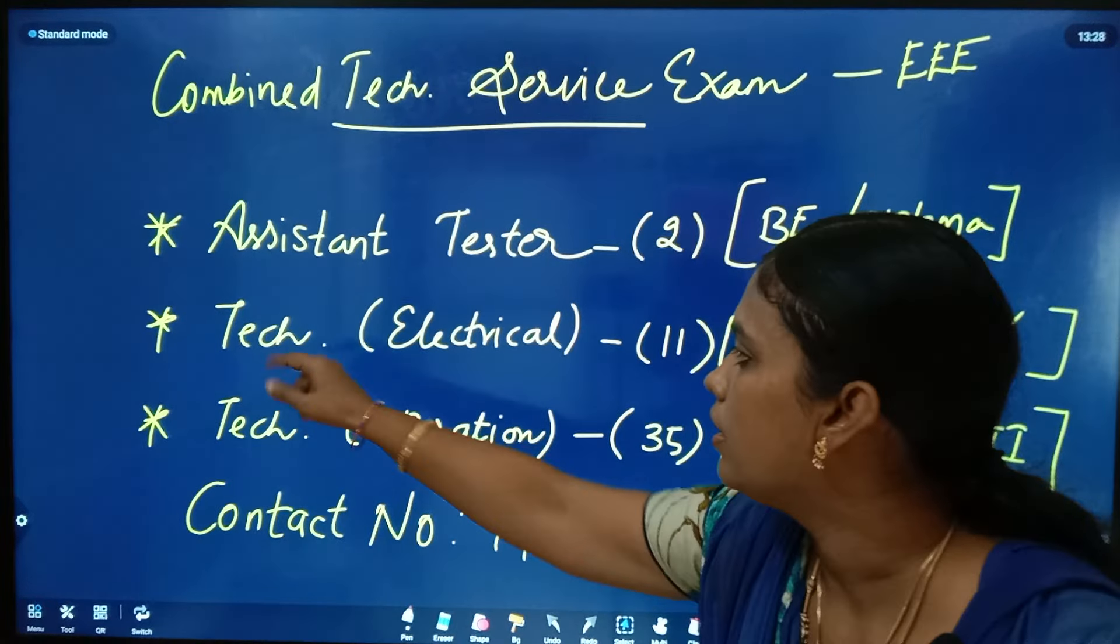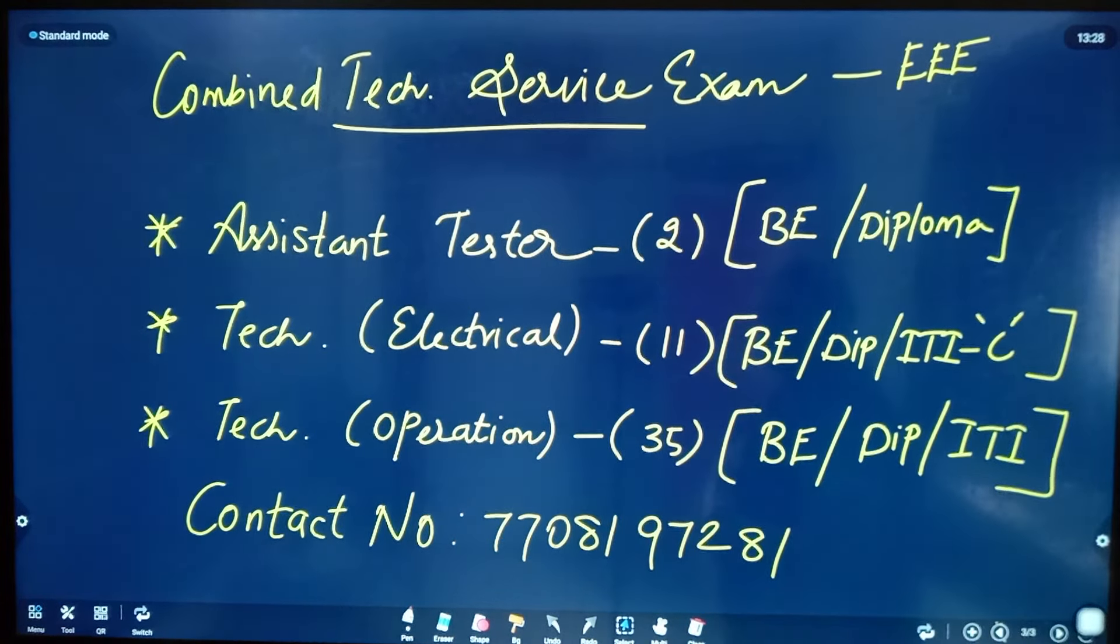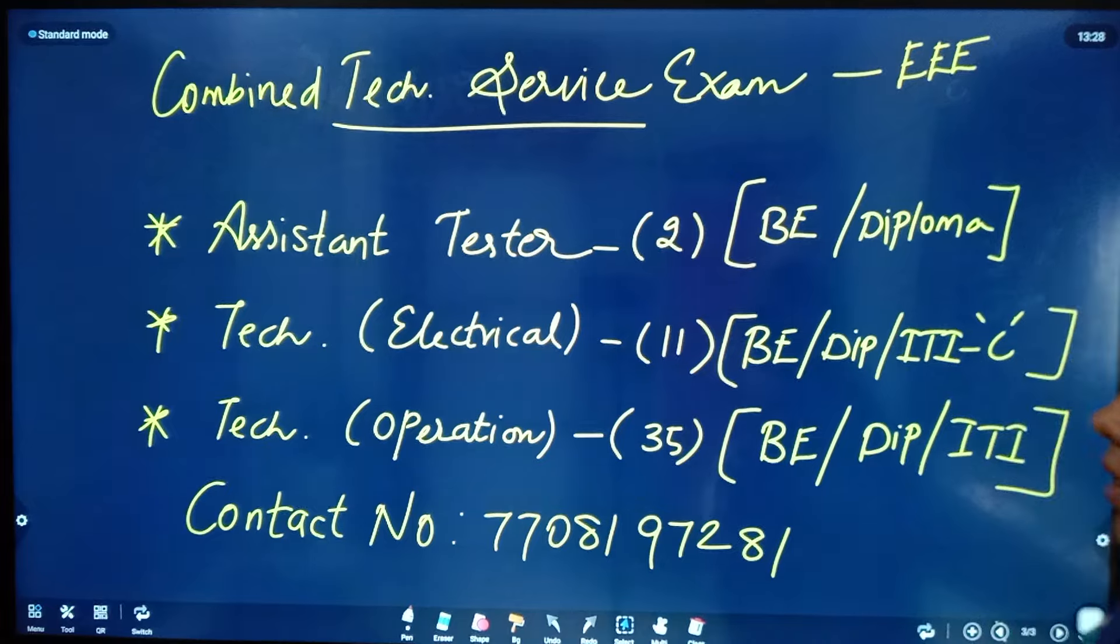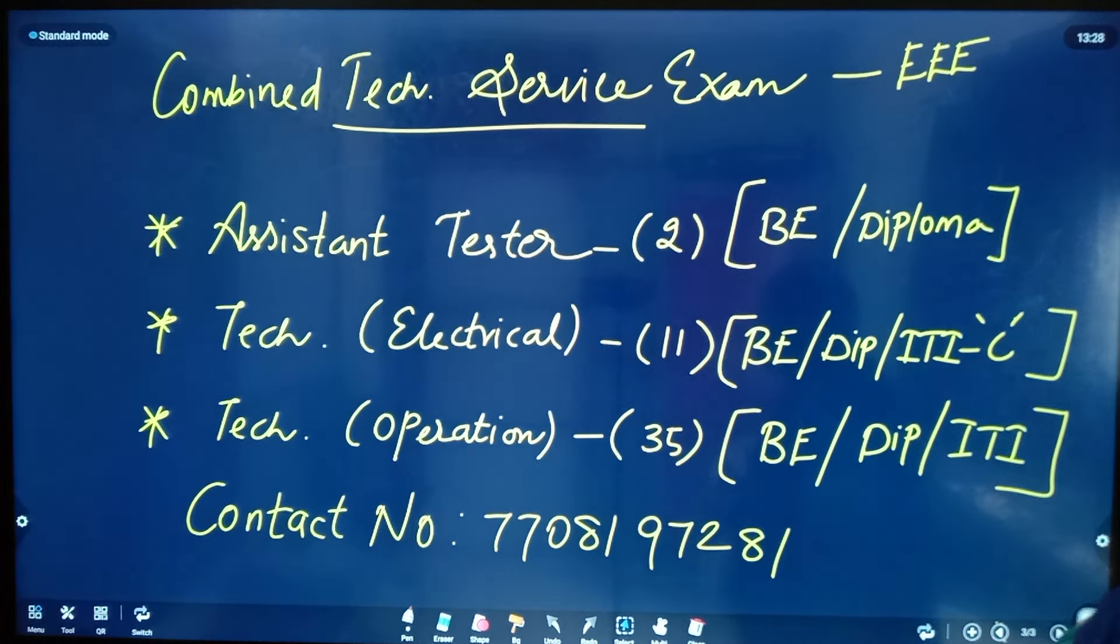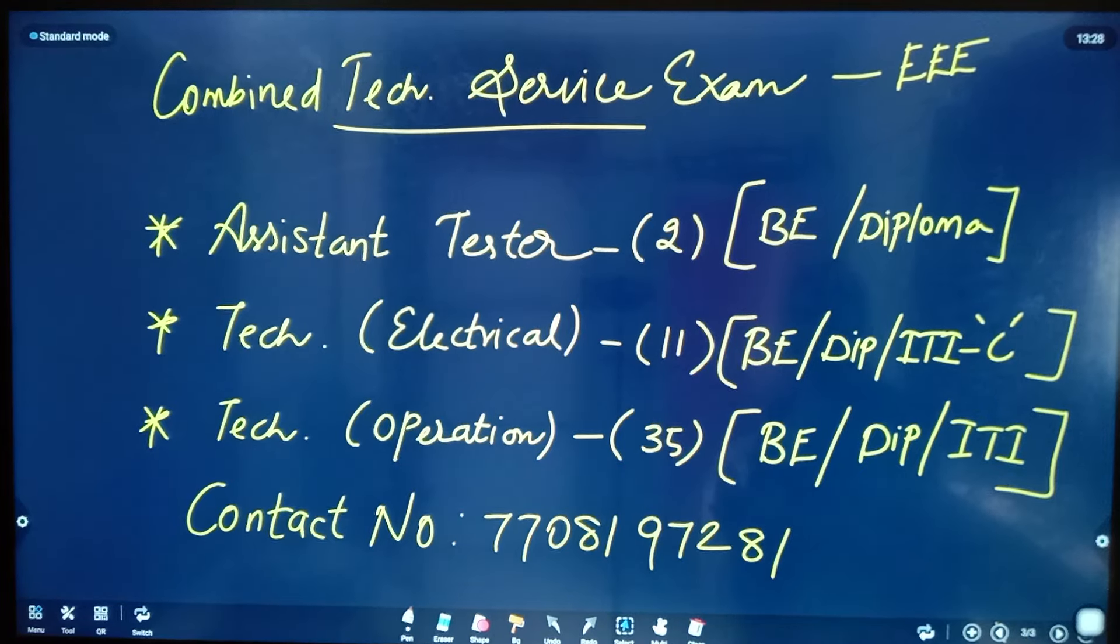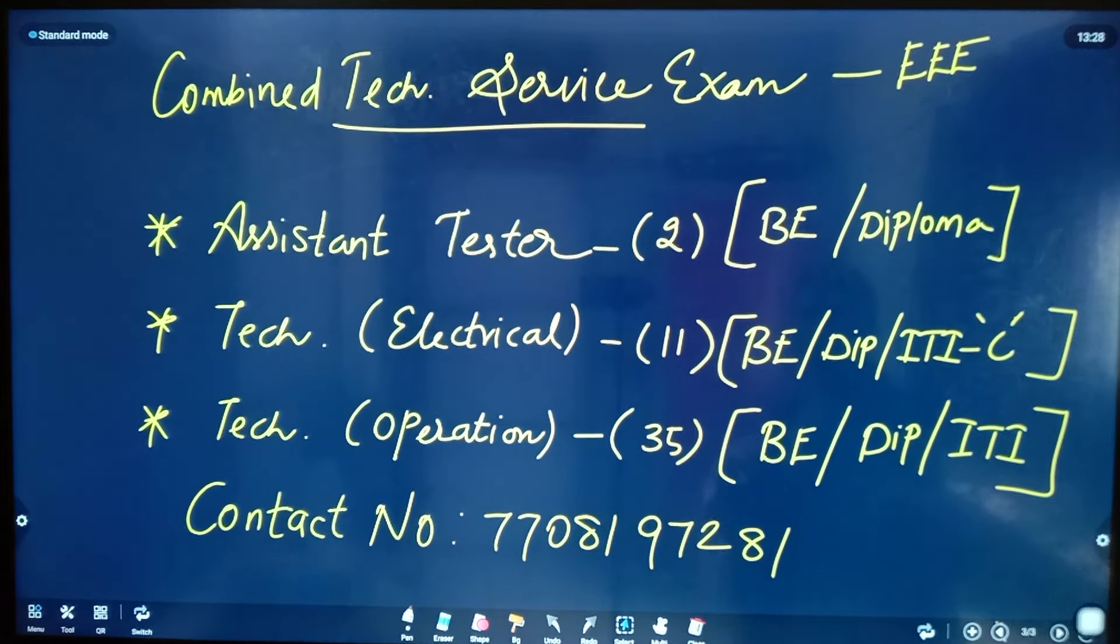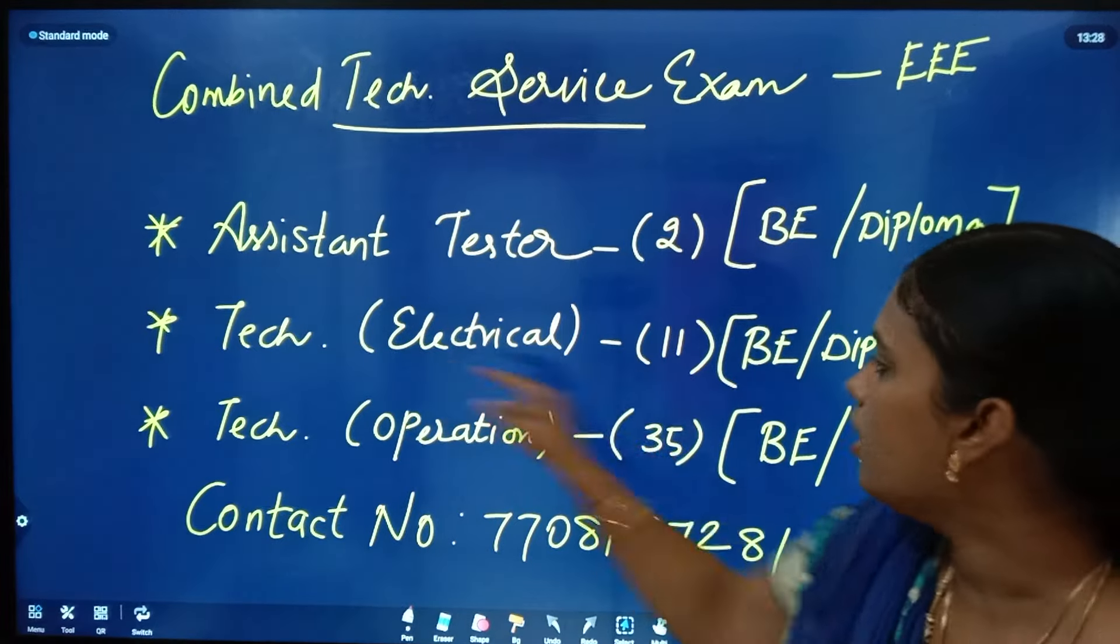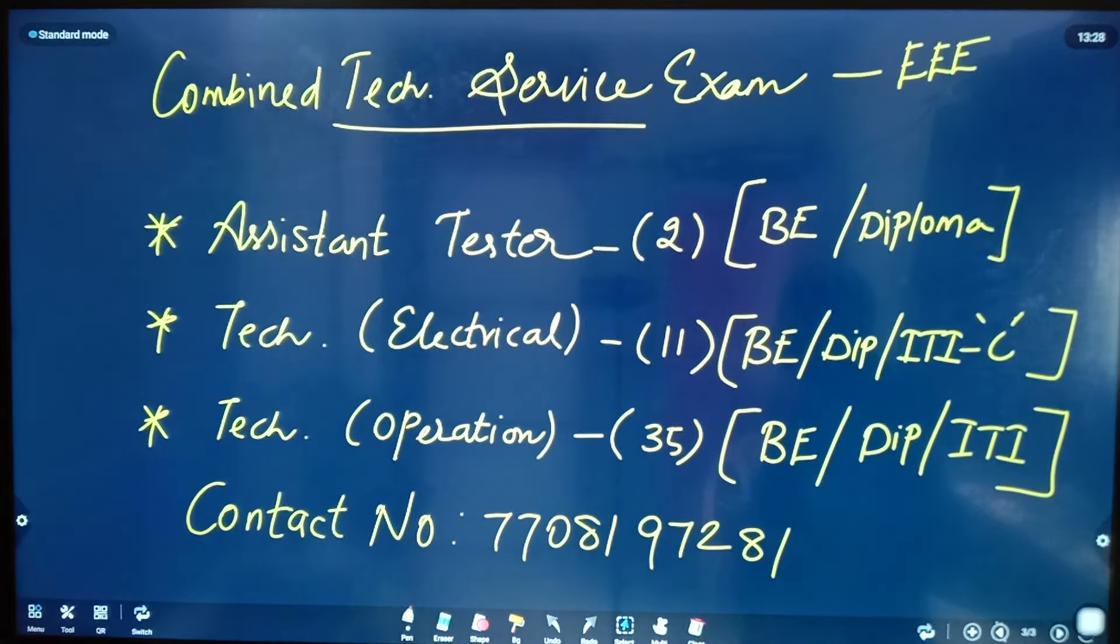For Technical Electrical, there are 11 vacancies. The qualifications required are BE, Diploma, or ITI-C. If you want the C certificate, you need to be eligible. These records in C make you exam eligible.